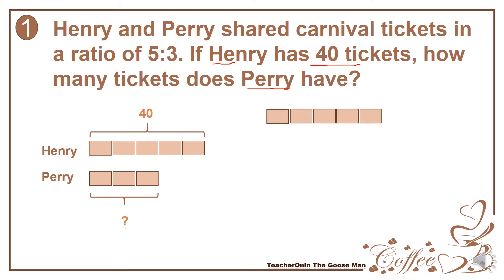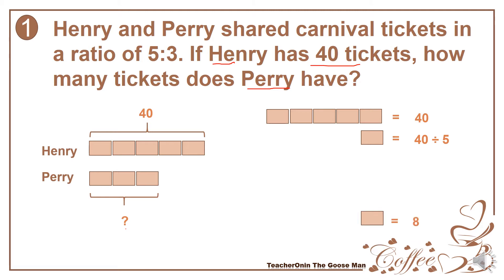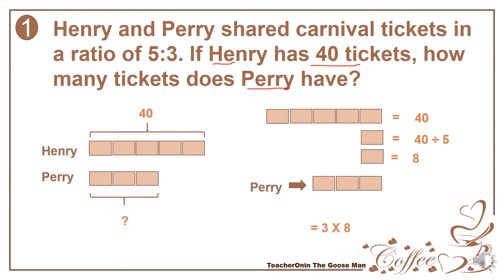Since 5 parts is equal to 40, I have 5 equal parts here and I want to find out the value of each equal part. Therefore, each part is equal to 40 divided by 5, so the value of each part is equal to 8. But take note that Perry has 3 parts, meaning that is 3 parts times 8, so I have 24.